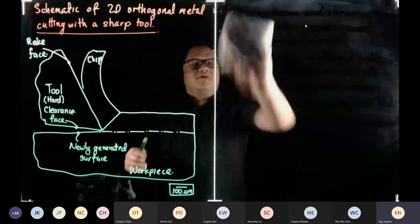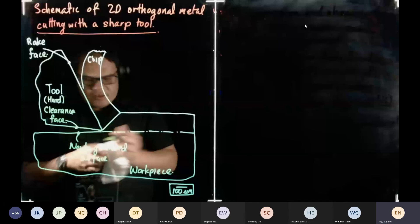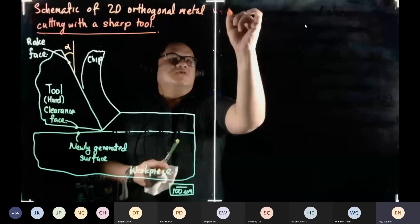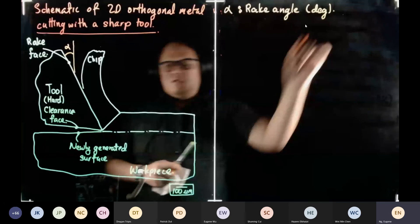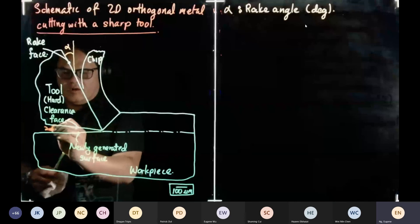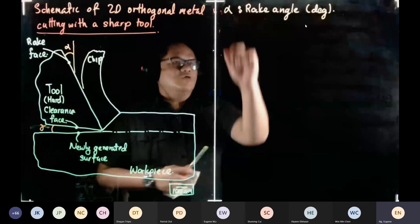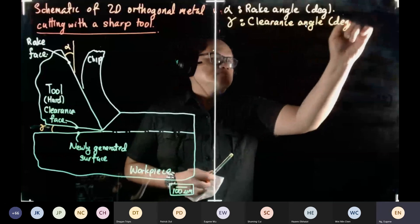The first angle: from the tool rake face you're going to draw a vertical line up, and this is known as your alpha angle. Alpha is your rake angle, and it's in degrees. Then over here we have an angle called gamma — the angle gamma represents the clearance angle.